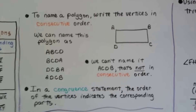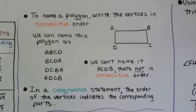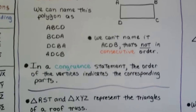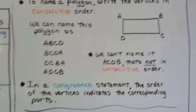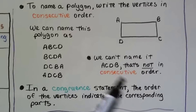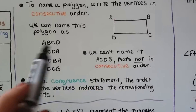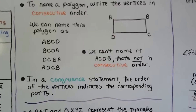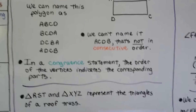In a congruent statement, the order of the vertices indicates the corresponding parts. So if we had ABCD congruent to PQRS, we would know that A and P are the first letters and therefore corresponding parts.